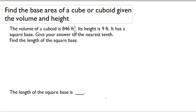The first thing we need to do is figure out what the base area is. I'm going to set up that formula V equals B times h, and I'm going to substitute what I know. The volume is 846 and the height is 9 feet. If I divide both sides by 9, I get that the base area is 94 square feet.